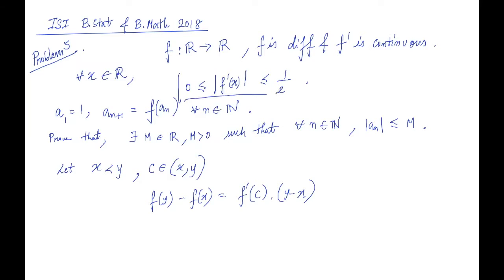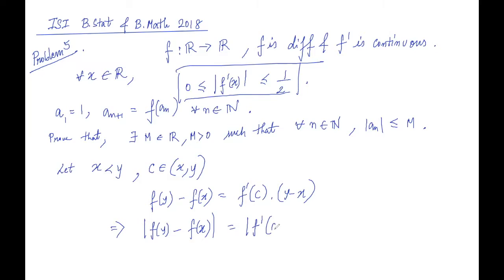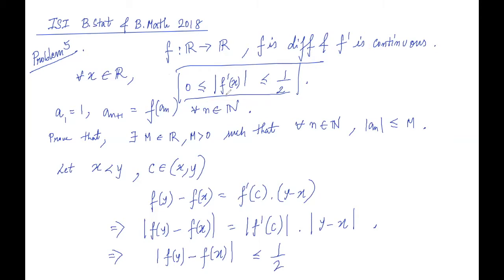This condition is given with a modulus sign, so let's take mod on both sides of the equation we just formed. So |f(y) - f(x)| = |f'(C)| · |y - x|. Now using the relation that has been given to us, this holds for all x in ℝ, so it will hold for C also. So |f'(C)| ≤ 1/2, giving us |f(y) - f(x)| ≤ (1/2)|y - x|.